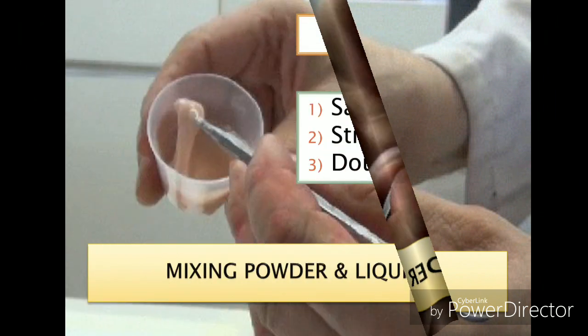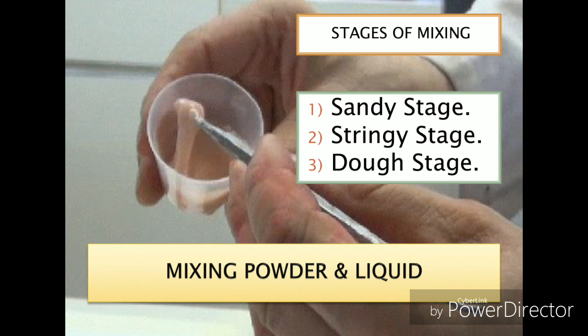Both powder and liquid components are mixed together and there are three stages of mixing: number one, sandy stage; number two, stringy stage; and number three, dough stage. Initially, when the powder and liquid are mixed, the mixture resembles wet sand — that's why the first stage is called sandy stage. When the mixture is elevated with a stirrer or mixing spatula it fails to separate and strings are seen — that's the stringy stage. When the strings are no more seen and the mixture can be easily separated into two halves, that stage is called the dough stage. The dough stage is the most important as the packing of acrylic is done at this stage.